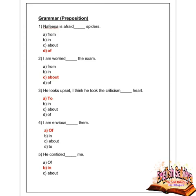We now move to prepositions. First question: Nafisa is afraid of spiders — which preposition? Options are from, in, about, and of. Option D is correct — of. Nafisa is afraid of spiders. Next question: I am worried about the exam — which preposition? Options are from, in, about, and of. Option C is correct — about. I am worried about the exam.